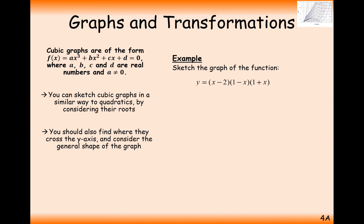Let's have another go — slightly different but not too different. As before, we consider the roots by setting each bracket equal to 0. In this example, x equals 2 gives zero from that bracket, x equals 1 gives zero, and x equals minus 1 gives zero. So we've got three root coordinates.